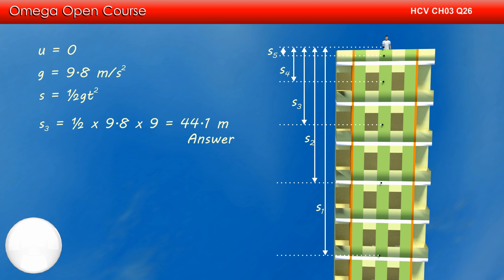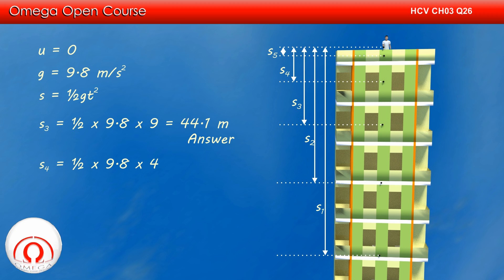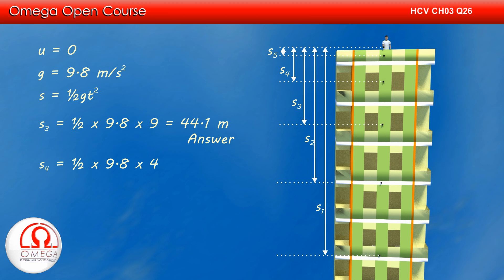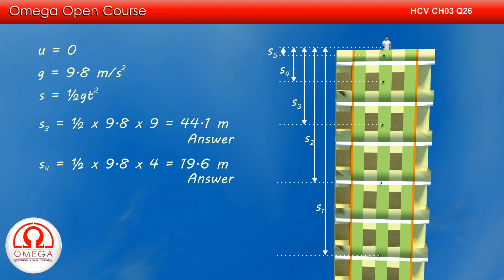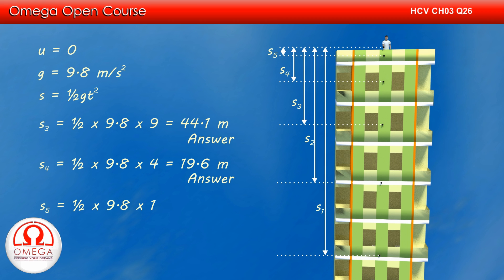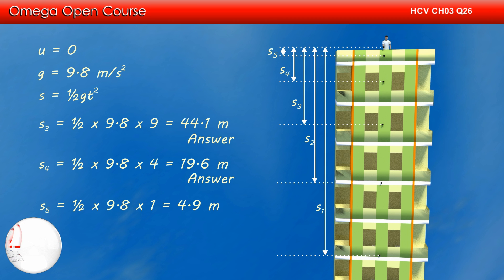Putting t = 2, we get the displacement of the fourth ball. Thus displacement of the fourth ball is ½ × 9.8 × 4, that is 19.6 meters. Putting t = 1, we get the displacement of the fifth ball as ½ × 9.8 × 1, or 4.9 meters.